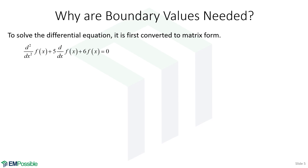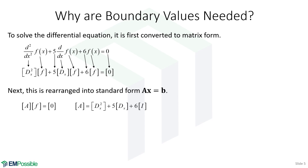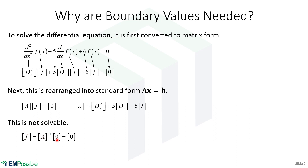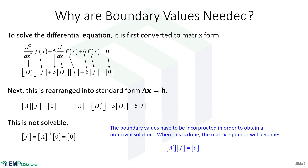We might ask why on earth are the boundary values even needed. Here's our differential equation — we go term by term to put it into matrix form, put it in standard form ax equals b, and we derive a matrix A that has a second order derivative matrix plus five times the first order derivative matrix plus six times the identity matrix. But our matrix equation now has zeros on the right-hand side. If we solve this, A inverse times a column vector of zeros gives us a column vector of zeros — that's a trivial answer, so we're not actually solving the problem.